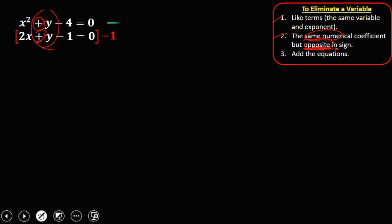Then just copy the first equation, then simplify the second equation. So distribute this negative 1 to every term or change all the signs of the second equation: negative 2x, negative y, positive 1, and 0.